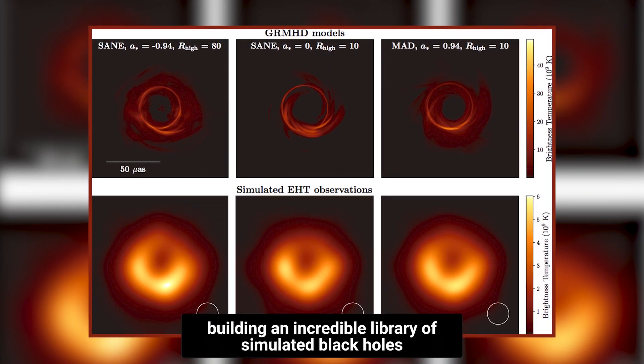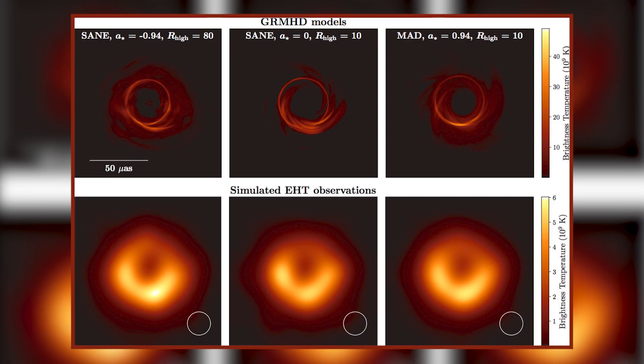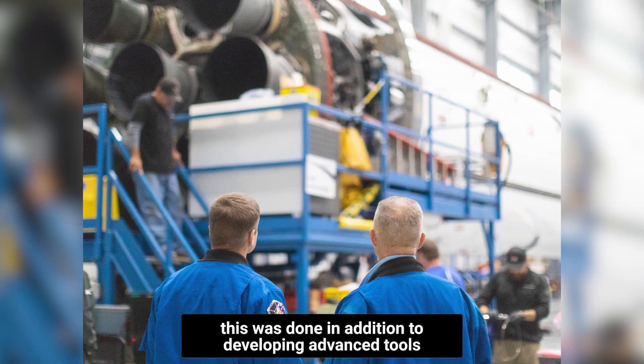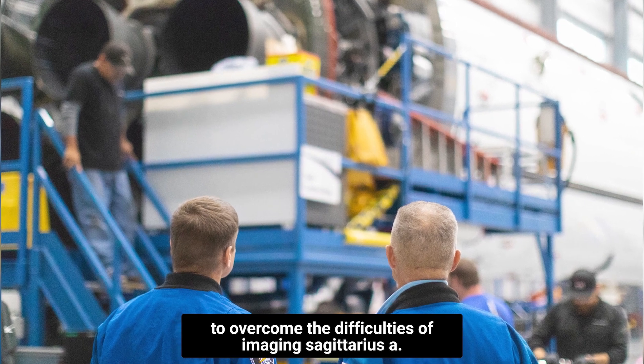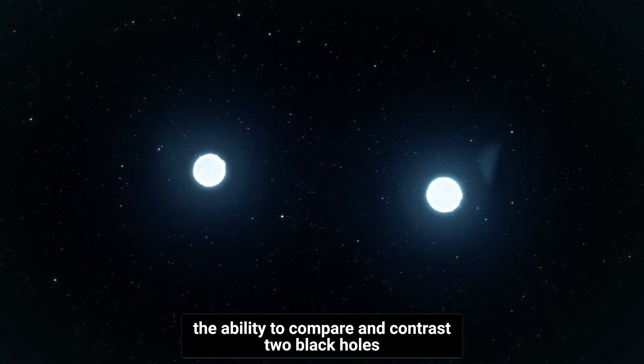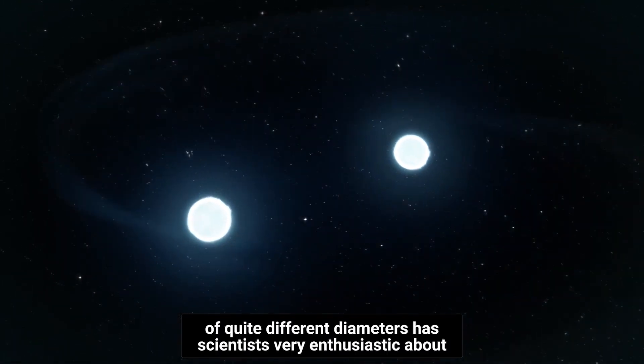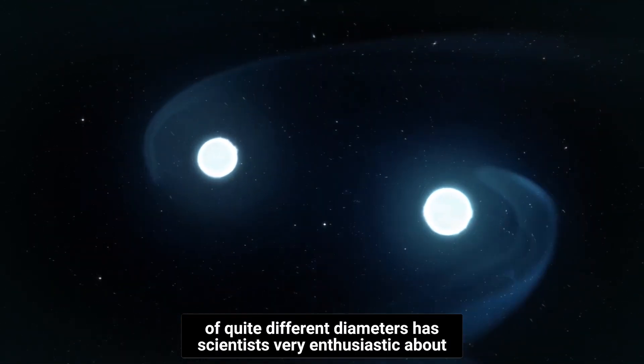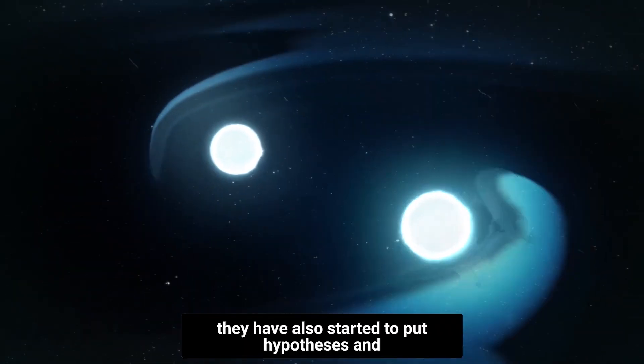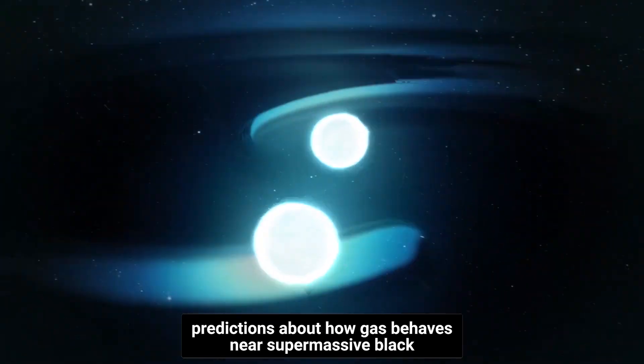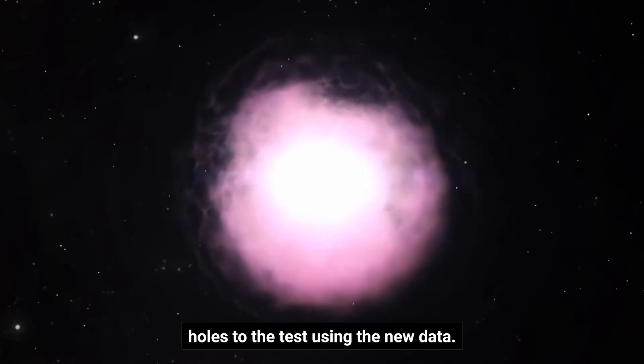The team built an incredible library of simulated black holes to compare with the observations, while developing advanced tools to overcome the difficulties of imaging Sagittarius A. The ability to compare and contrast two black holes of quite different diameters has scientists very enthusiastic about the arrival of photographs of two of them. They have also started to put hypotheses and predictions about how gas behaves near supermassive black holes to the test using the new data.